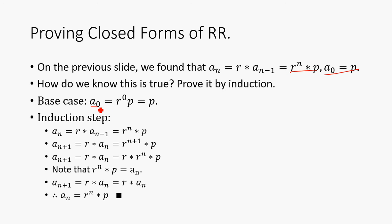So we're going to check a_0, so that's going to be r^0 * p. But since r^0 is 1, it'll just cancel out, leaving only p. Which is what we have to find up here. So the base case holds.